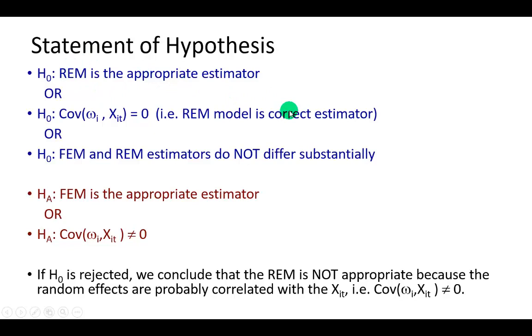A rejection of that means that the random effects are probably correlated with one or more of the regressors, in which case the fixed effects model is the right way to go. So in a nutshell, the null hypothesis says go with random effects, and if we reject that, then we go with the alternative which says go with fixed effects.